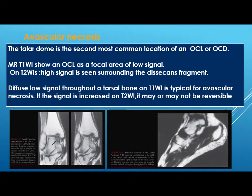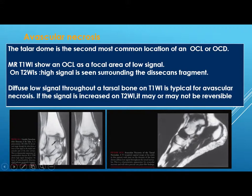The talar dome is the second most common site for avascular necrosis, after the knee. On T1 it shows an osteochondral lesion as a focal area of low signal. For osteochondritis dissecans, on T2 high signal is seen surrounding the discal fragment. Diffuse low signal throughout the tarsal bone on T1 is typical for avascular necrosis, mostly affecting the navicular bone. If the signal increases on T2, it may or may not be reversible.